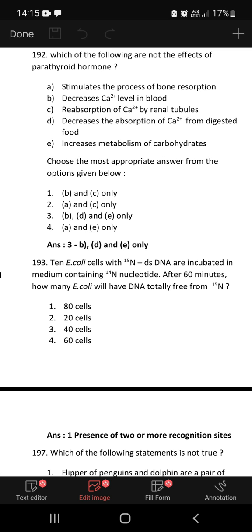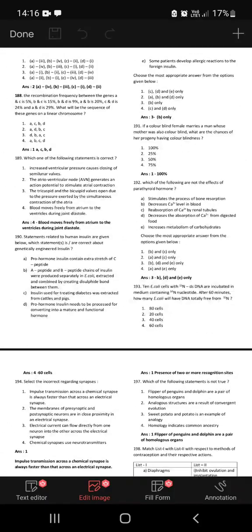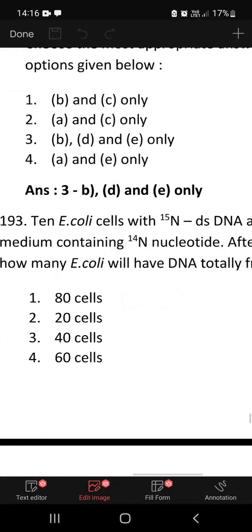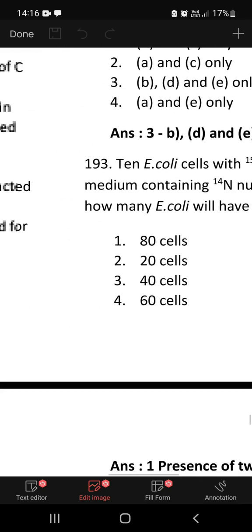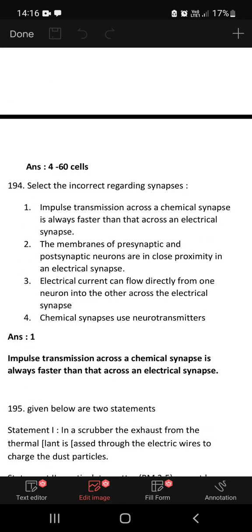10 E. coli cells with nitrogen-15 and double stranded DNA are incubated in medium containing nitrogen-14 nucleotide. After 60 minutes, how many E. coli will have DNA totally free from nitrogen-15? After 60 minutes we have to calculate that, and that is going to be 60 cells.